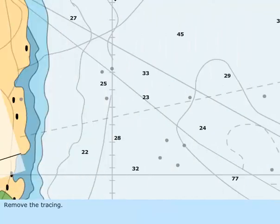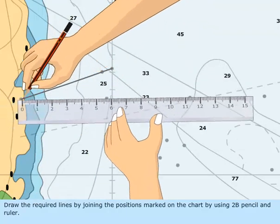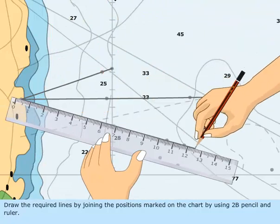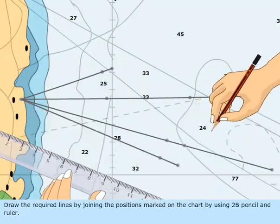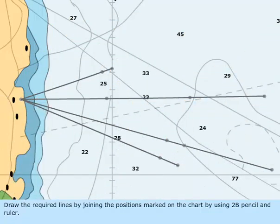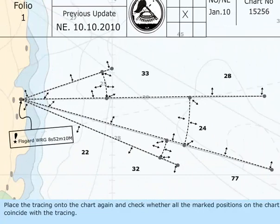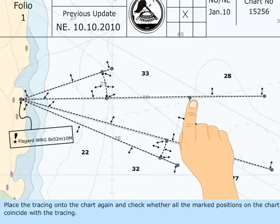Remove the tracing. Draw the required lines by joining the positions marked on the chart by using a 2B pencil and ruler. Place the tracing onto the chart again and check whether all the marked positions on the chart coincide with the tracing.